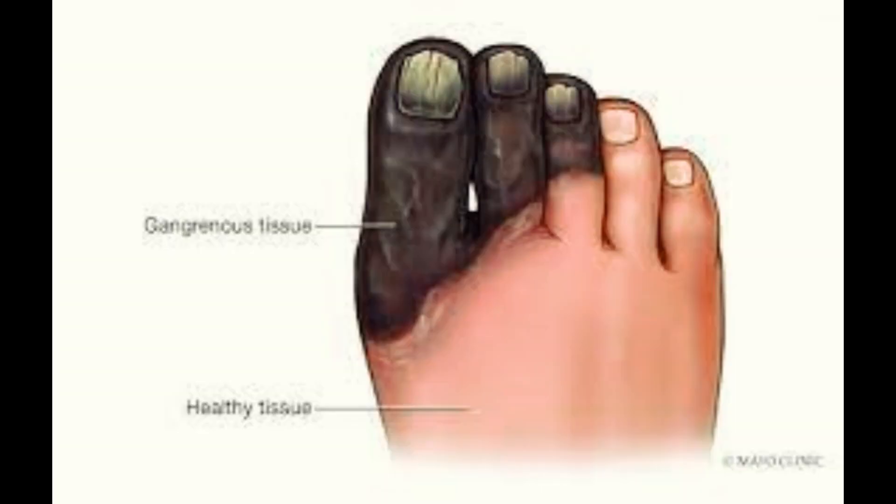5. Gangrene. Severe cases of poor circulation and untreated infections can result in tissue death — gangrene — which may require amputation of the affected toe, foot, or lower leg.